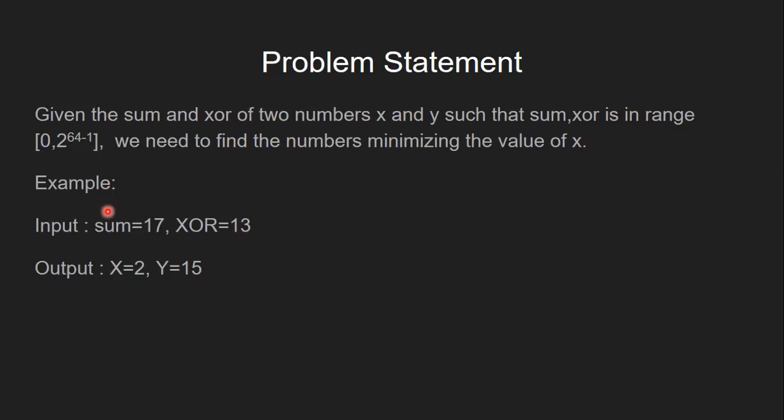For example, if input is sum equals 17 and XOR equals 13, the output is X equals 2 and Y equals 15. Here we can see the value of X is minimized.